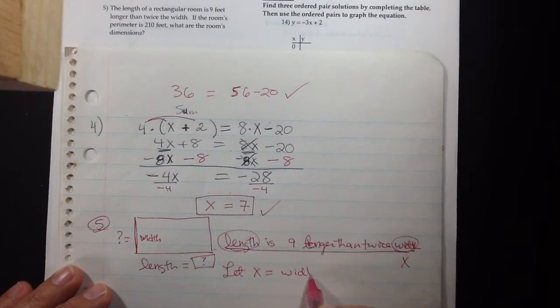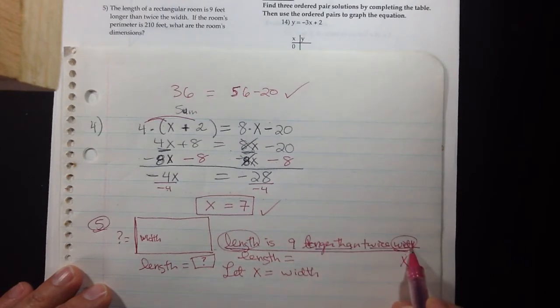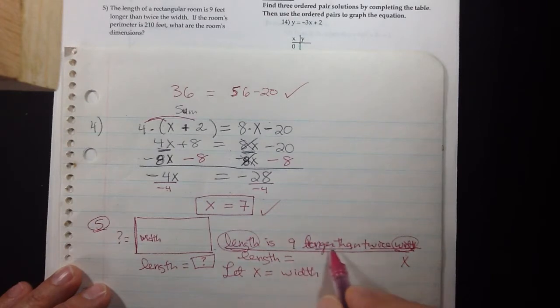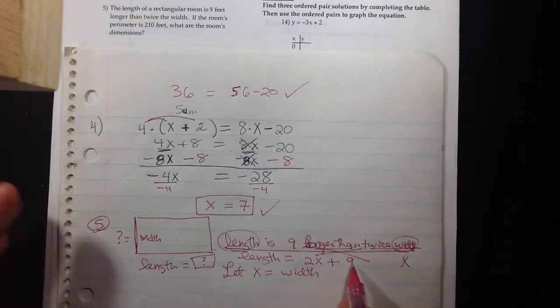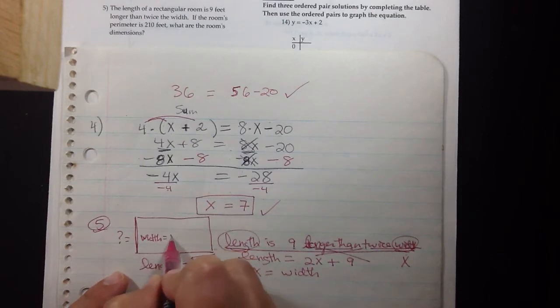And then you can express the length. The length equals nine feet longer than twice the width. So that two X is going to be in nine feet longer than. Technically the order, we do twice the width first and then go nine feet longer. Addition is commutative so it doesn't matter, two X plus nine, nine plus two X, it doesn't matter.